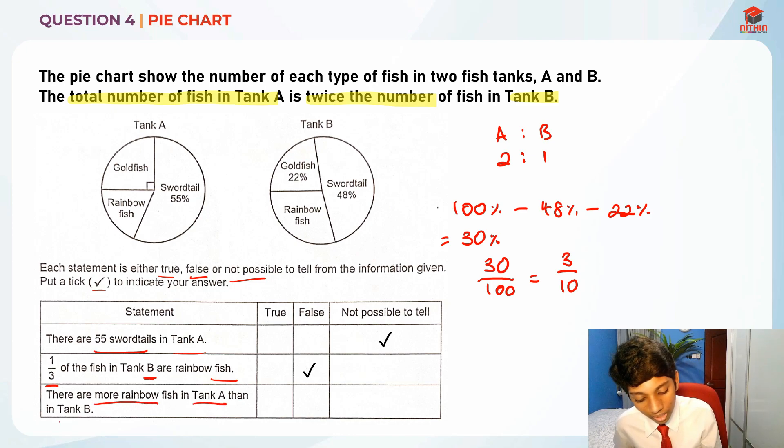So for tank A the rainbow fish, this is actually 25 percent. Do remember for pie charts, when they give you a right angle it actually means that that segment is actually 25 percent of the total.